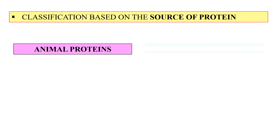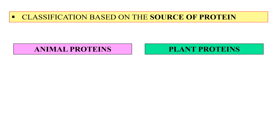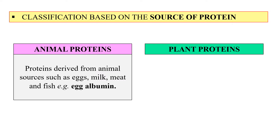The first classification is on the basis of the source of the protein. On the basis of source, proteins can either be taken from animal or from plant. When we take proteins from animal sources, these are called animal proteins and they include sources like egg, milk, and fish — for example, egg albumin. These animal proteins are usually high quality proteins because they contain adequate amounts of all essential amino acids.